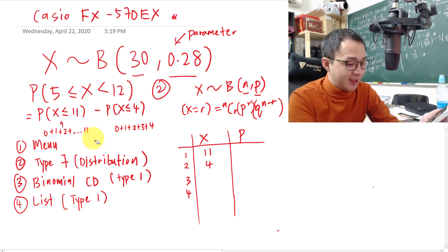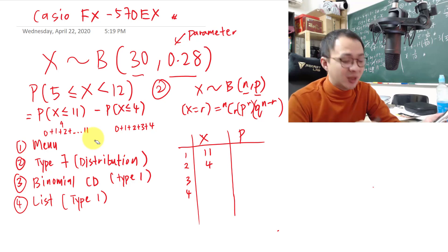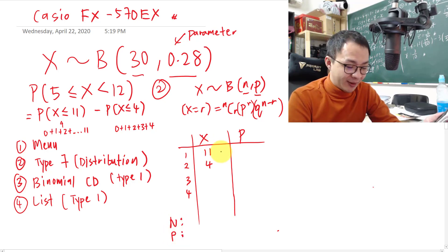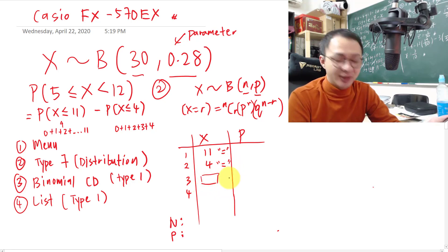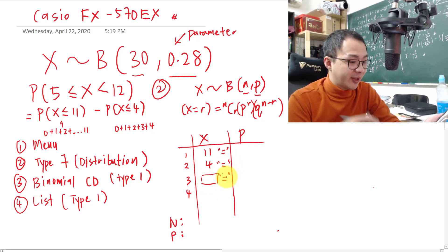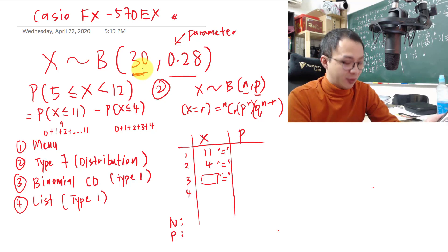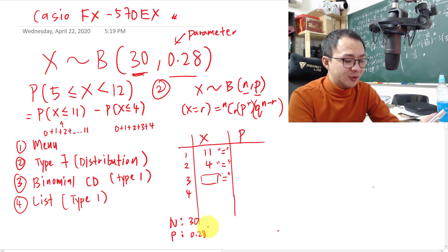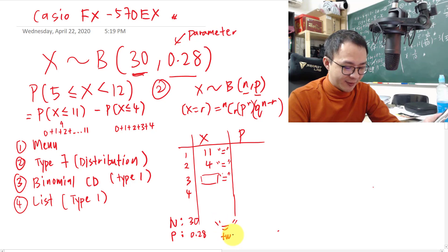So type 11, press equal; type 4, press equal; press equal one more time to enter the n and p section. Type n = 30, then p = 0.28. After entering both values, press equal twice to compute.